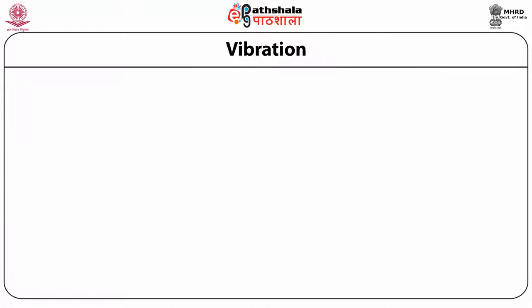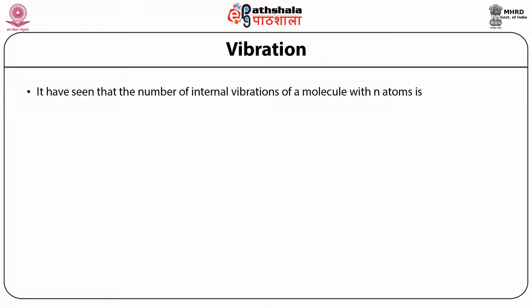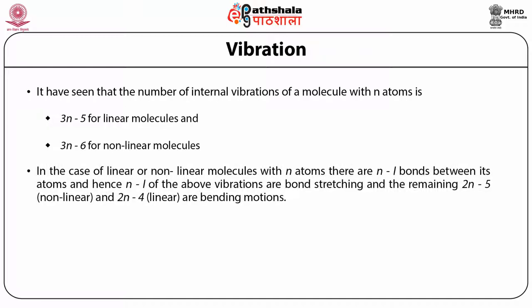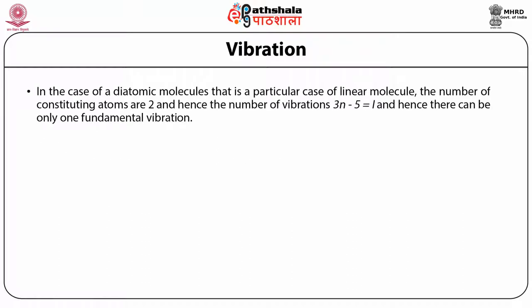Coming to vibrations: the number of internal vibrations of a molecule with N atoms is 3N-5 for linear molecules and 3N-6 for nonlinear molecules. In the case of linear molecules with N atoms, there are N-1 bonds between its atoms, and hence N-1 of those vibrations are bond stretching and the remaining 2N-4 for linear or 2N-5 for nonlinear are bending motions. In the case of diatomic molecules — a particular case of linear molecules — the number of constituting atoms is 2, and hence the number of vibrations 3N-5 = 1, so there can be only one fundamental vibration. The presence of overtones is due to anharmonicity of the molecule.